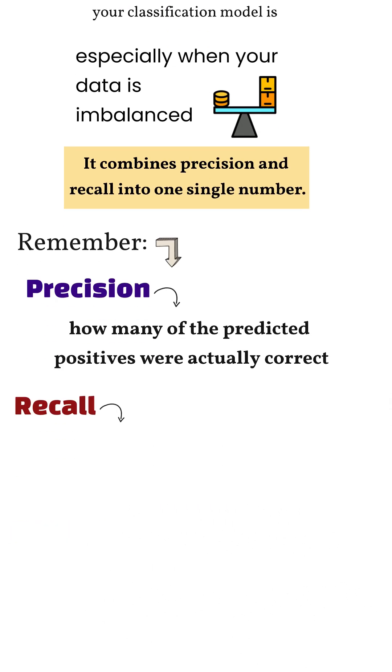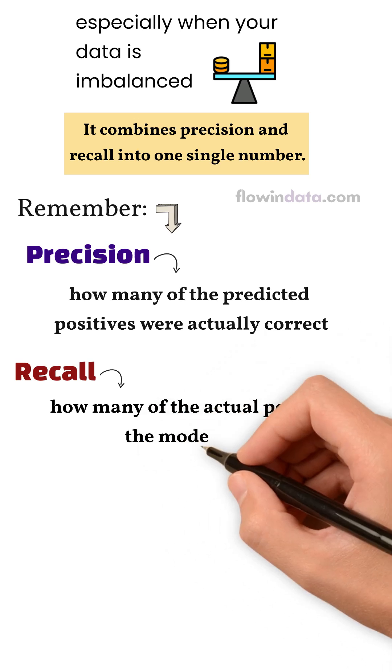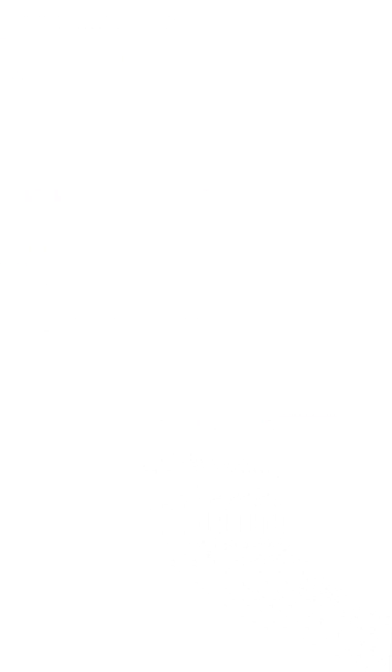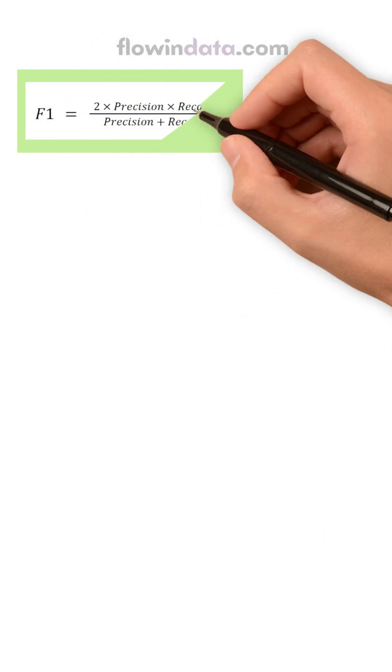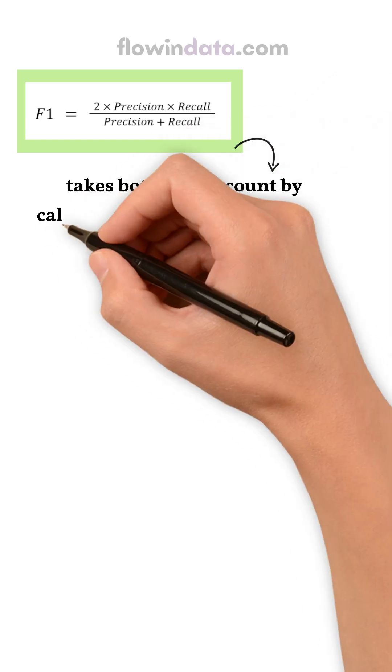Recall tells you how many of the actual positives the model found. The F1 score takes both into account by calculating their harmonic mean.